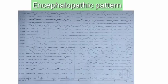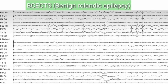This EEG shows an encephalopathic pattern, which usually occurs in hepatic encephalopathy, uremic encephalopathy, or severe encephalitis. Generalized slow waves are seen throughout the brain activity — that is the encephalopathic pattern.